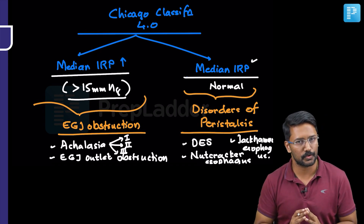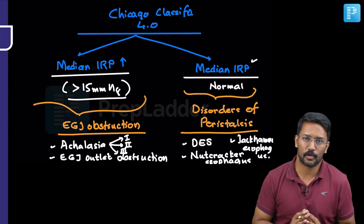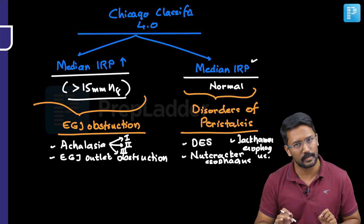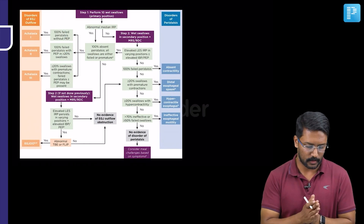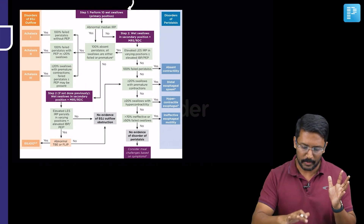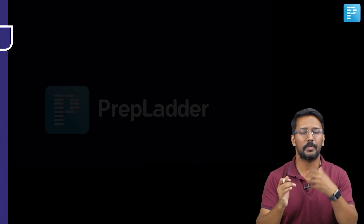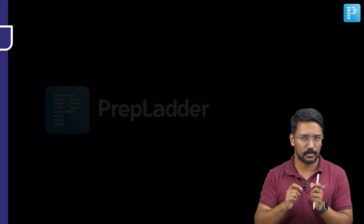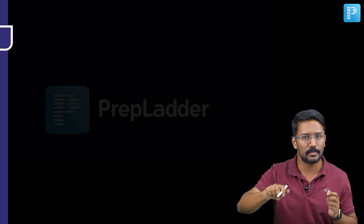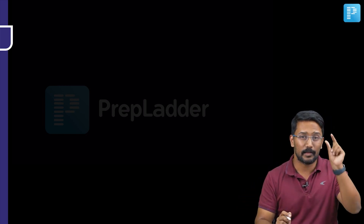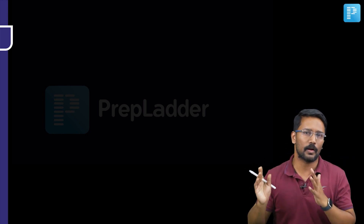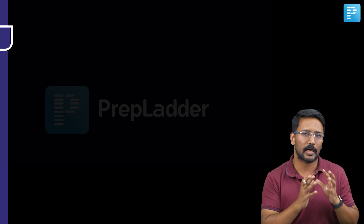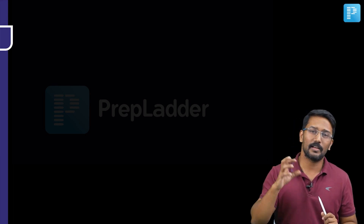This classification is based on high resolution manometry. In HRM, the patient is asked to swallow a tube containing multiple pressure transducers, which is positioned beyond the lower esophageal sphincter. Pressure changes in different areas are transmitted to a computer, and the data captured during swallowing is fed back in the form of a colored topographic image.